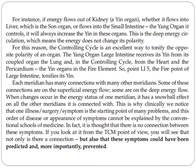For instance, if energy flows out of the kidney, a yin organ, whether it flows into the liver — the son organ — or flows into the small intestine, the yang organ it controls, it will always increase the yin in these organs. This is the deep energy circulation, which means the energy does not change its polarity. For this reason, the controlling cycle is an excellent way to tonify the opposite polarity of an organ. The yang organ large intestine receives its qi from its coupled organ, the lung, and in the controlling cycle, from the heart and pericardium, the yin organs in the fire element. So point LI-5, the fire point of large intestine, tonifies its qi.